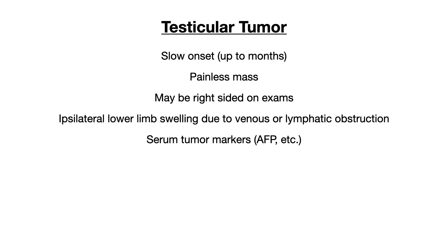The other thing a test writer would hopefully give you is a serum tumor marker, depending on which type of testicular cancer they're describing, to push you in that direction. They know that medical students on Step 1 and Level 1 aren't clinically oriented yet, so differentiating a testicular tumor from other testicular pathology is difficult. Therefore, they're very likely to give you that tumor marker — either positive or negative in a lab printout.